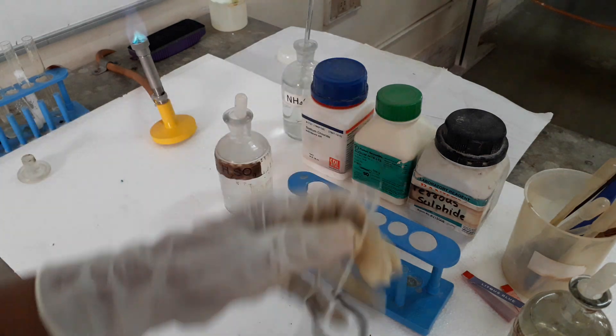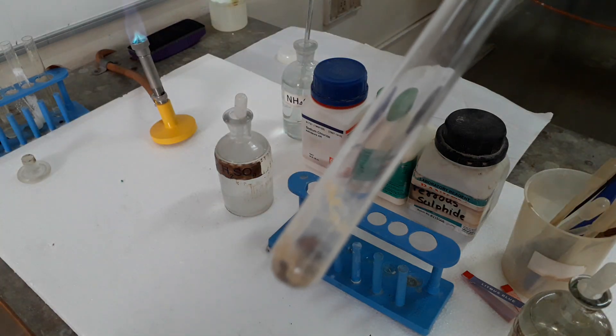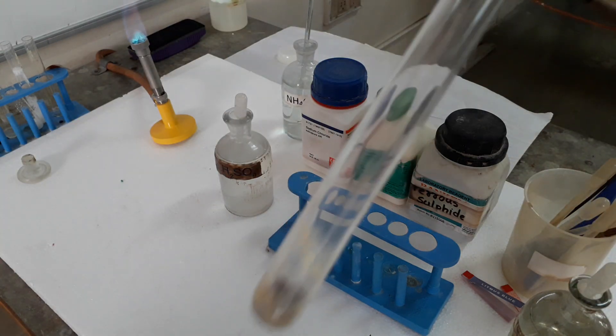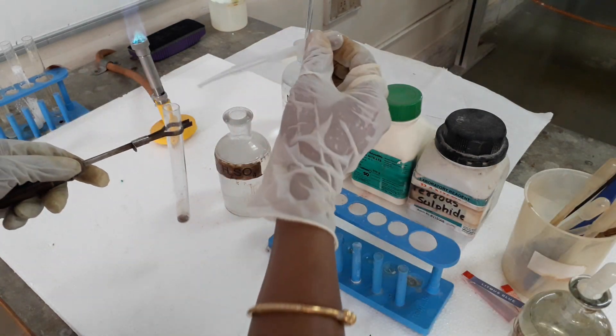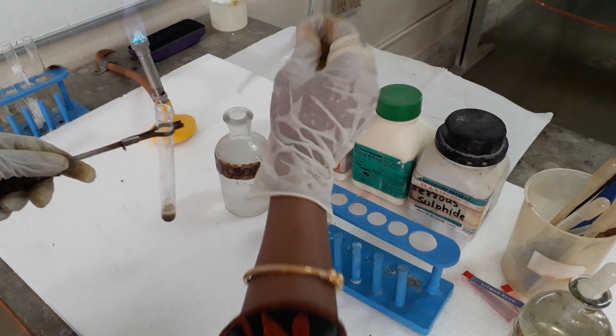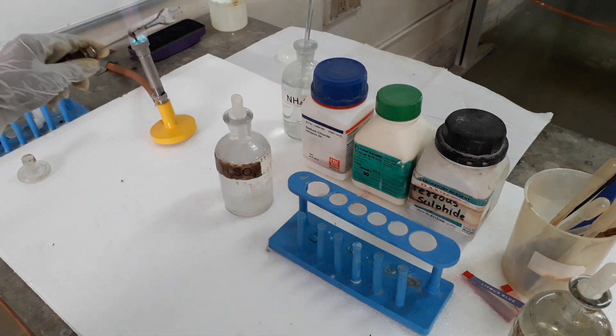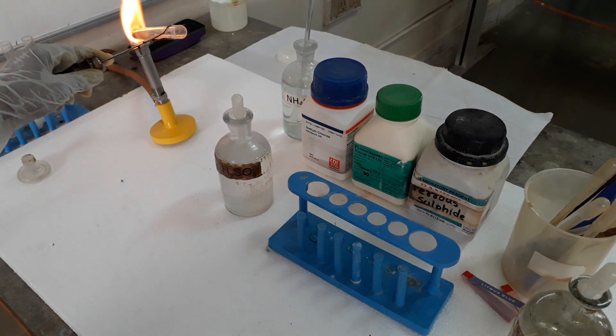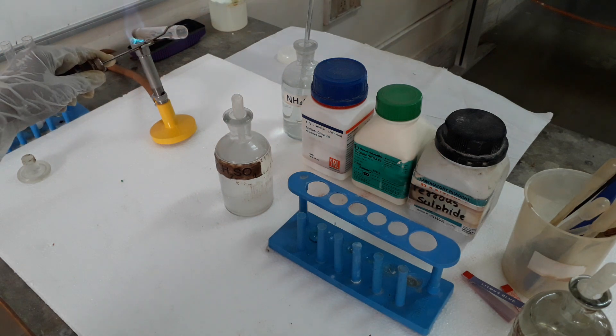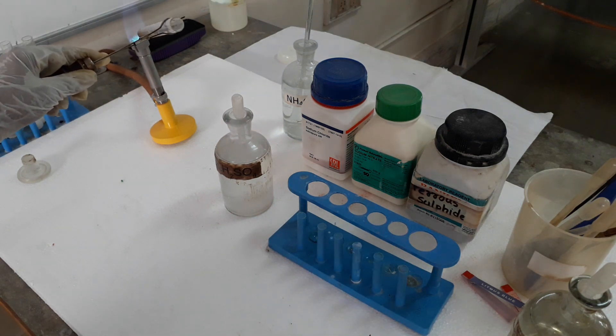Now the next one is sulfide detection of S2 minus. For that I have taken ferrous sulfide pieces. We will add concentrated sulfuric acid and heat it. Little heating is required, and we will see a gas liberates which has a rotten egg smell.